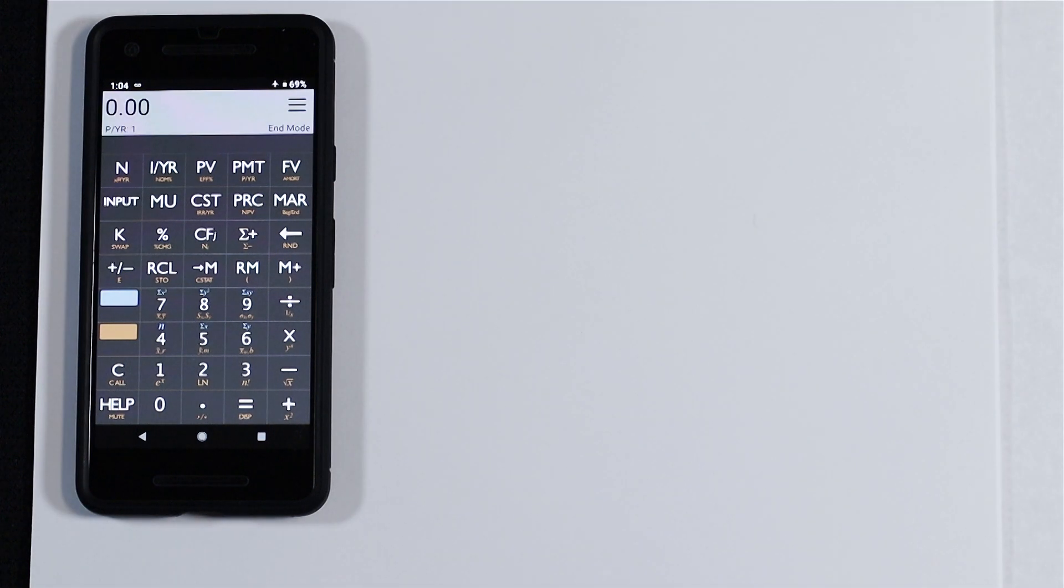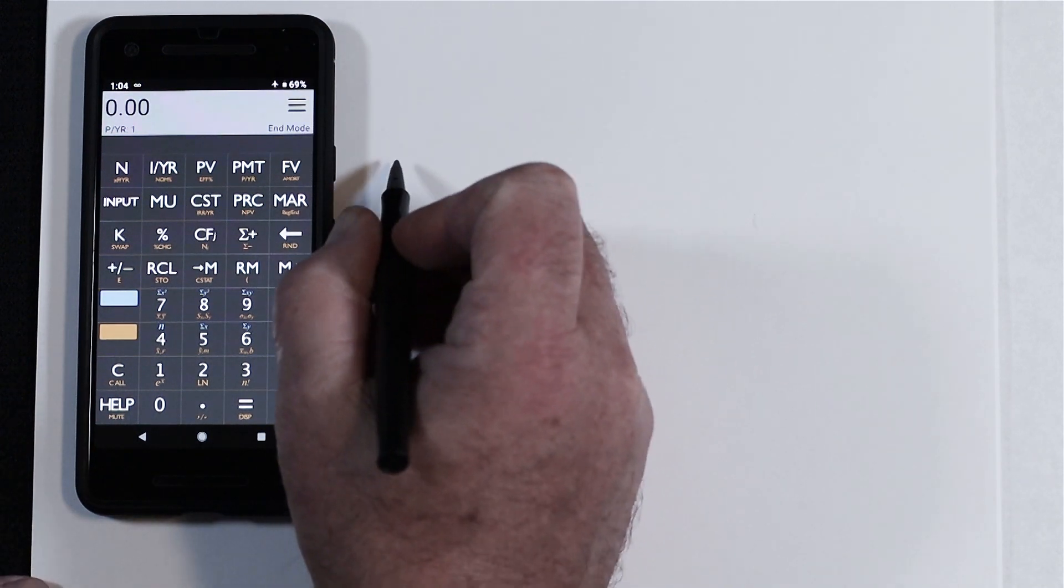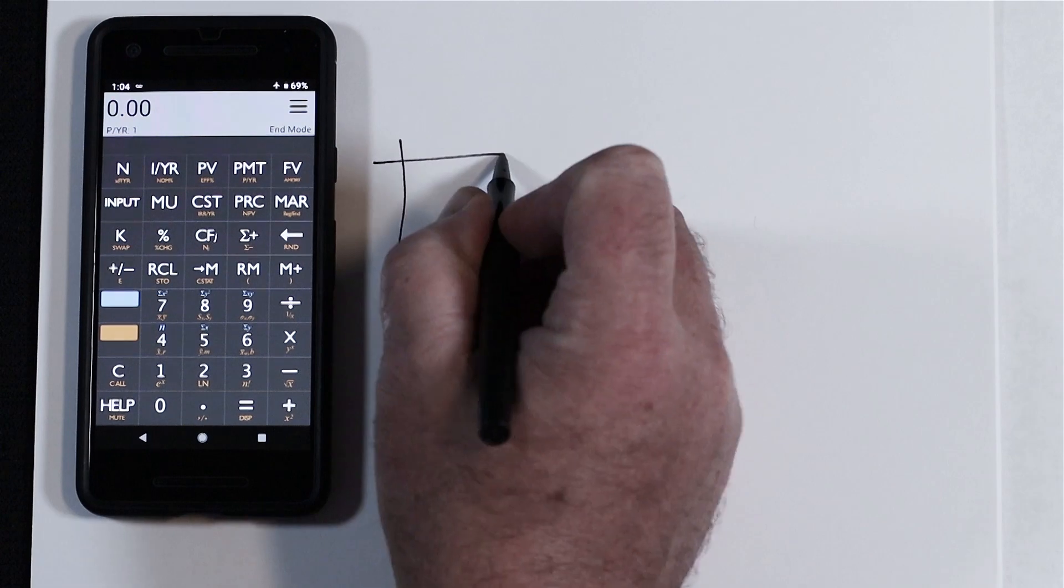Let's look at another example problem of entering cash flows into the HP 10b2 on the app. So here we have a T account that looks like this.